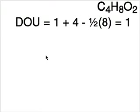We're going to calculate the degree of unsaturation, which will tell us the number of pi bonds plus rings, by taking 1 plus the number of carbons, minus 1 half the number of hydrogens and halogens, which in this case is 8, and that equals 1.